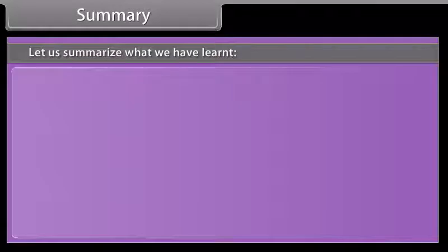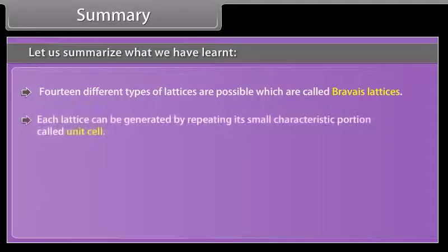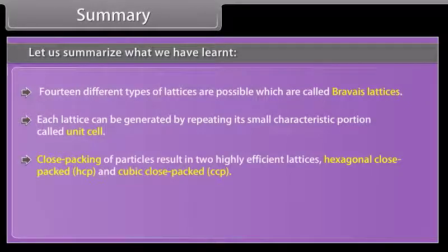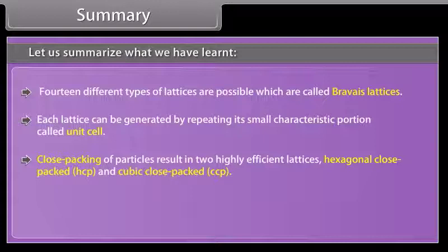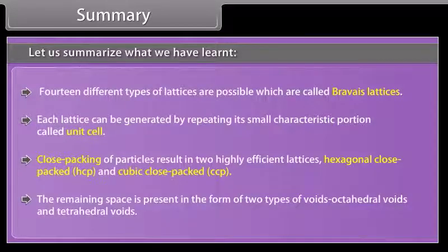In summary: 14 different types of lattices are possible, called Bravais lattices. Each lattice can be generated by repeating its small characteristic portion called a unit cell. Close packing of particles results in two highly efficient lattices — hexagonal close packed (HCP) and cubic close packed (CCP). The remaining space is present in the form of two types of voids: octahedral voids and tetrahedral voids.